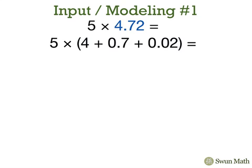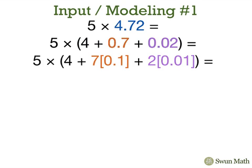Next, we're going to decompose 7 tenths and 2 hundredths. 7 tenths becomes 7 times 1 tenth, and 2 hundredths becomes 2 times 1 hundredth. Now we're going to use the distributive property and multiply 5 times 4, and add it to 5 times 7, and 5 times 2.